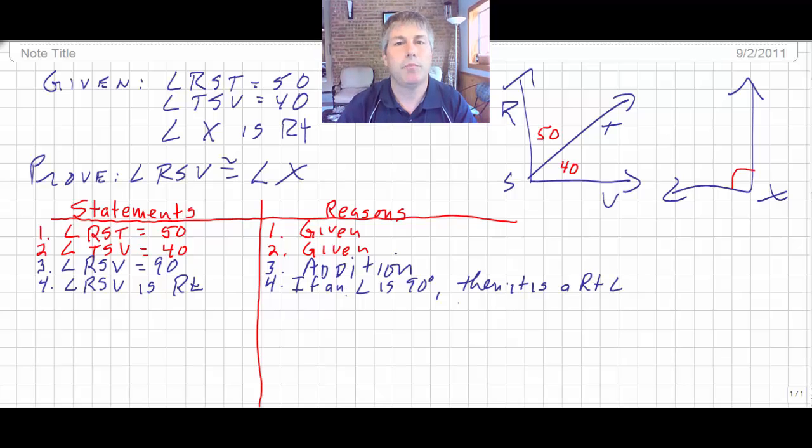How about that? There's our P implies Q. P, if an angle is 90, implies Q. So step three implies step four, if 90, then right. So back to my givens, step five, aren't we given that angle X is a right angle? And that was given to us.